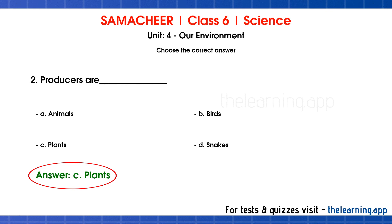Plants are producers. Plants give us food. Animals, snakes, and birds are all consumers. Plants prepare their own food through photosynthesis. That's why plants are called producers.